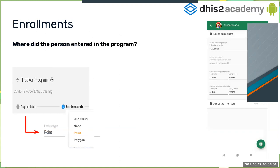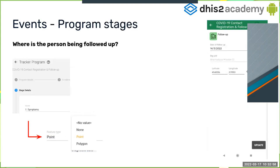For the enrollment — where the person entered the program — go on the server to Maintenance, Tracker Program, our COVID-19 program. In the enrollment details you'll see the feature type option, and again you select none, point, or polygon. In the Android application, under the register data section, you'll see the coordinates for the enrollment below — where the person was registered.